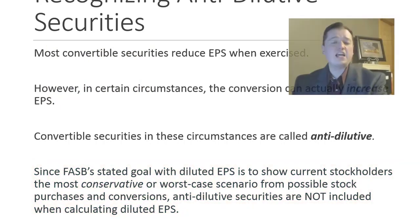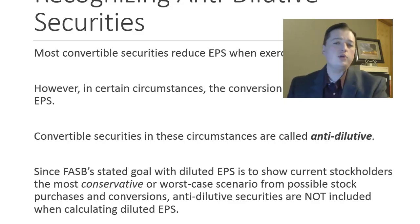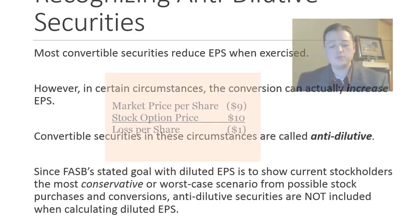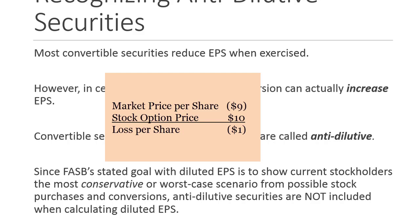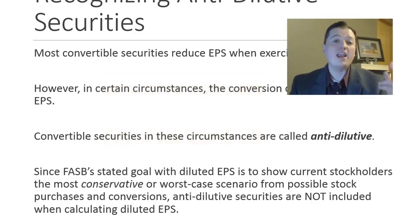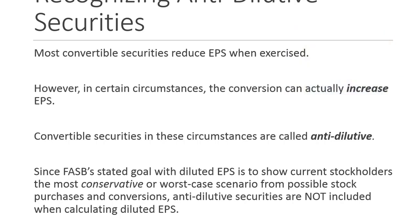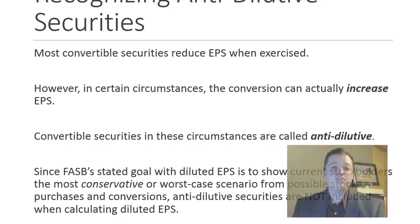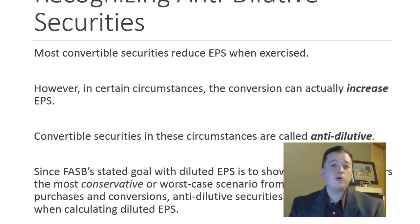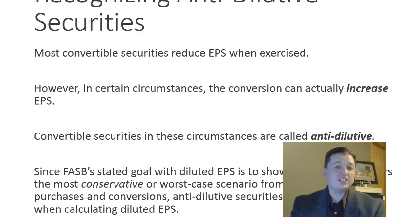From a finance perspective — not accounting, but finance — the other reason we don't include anti-dilutive securities is because they're not what we call 'in the money.' In the money means an investment is worth using. For example, if your stock option lets you buy at ten dollars and the stock only sells for nine dollars in the market, why would you use it? You'd lose a dollar on every option. They're not in the money, they're not worth anything. That's the finance piece of FASB's decision to leave out anti-dilutive securities.